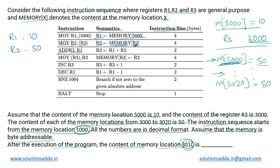Next, ADD r2, r1 adds the contents of both registers and writes the result back to r2, so r2 becomes 10 + 50 = 60. Then MOV [r3], r2 — here r3 is used with parentheses, meaning we write to the memory location given by the address stored in r3, which is 3000. So we overwrite memory location 3000 with the contents of r2, and it becomes 60.